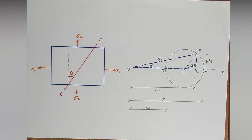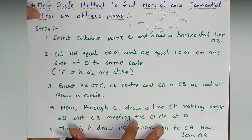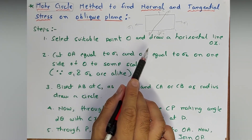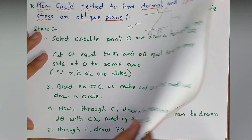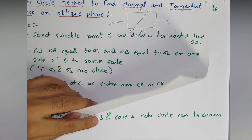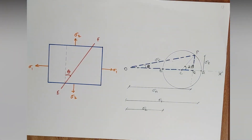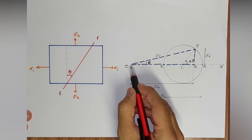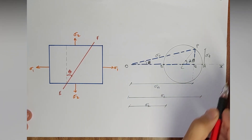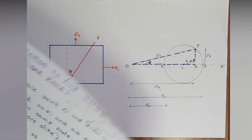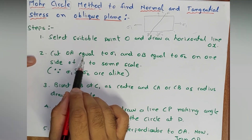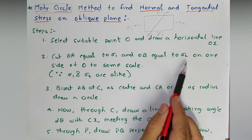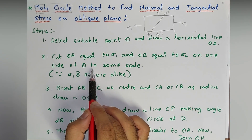By this we will calculate the values of normal stress, tangential stress, and resultant stress. Starting with the steps: Step 1 — select a suitable point O and draw a horizontal line OX. Here is the first thing: I have selected point O and drawn horizontal line OX. Step 2 — cut OA equal to σ1 and OB equal to σ2 on one side of O, to some scale.